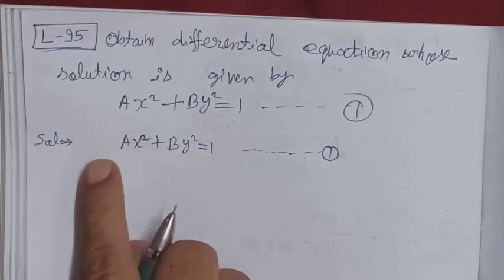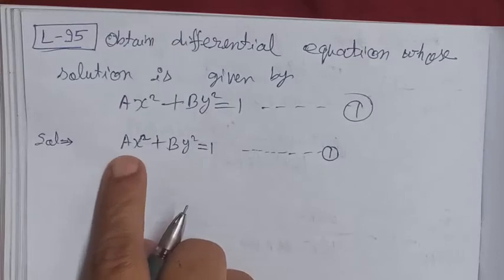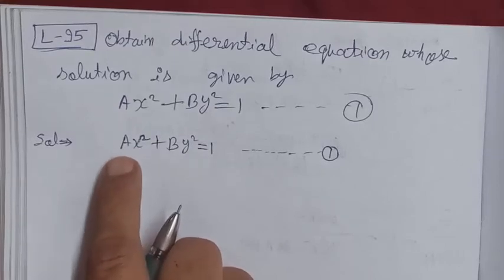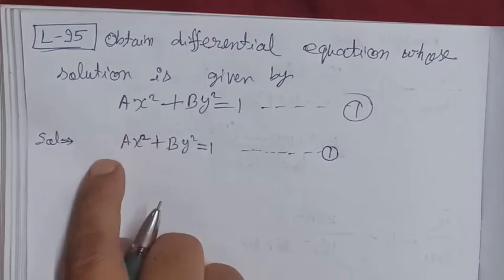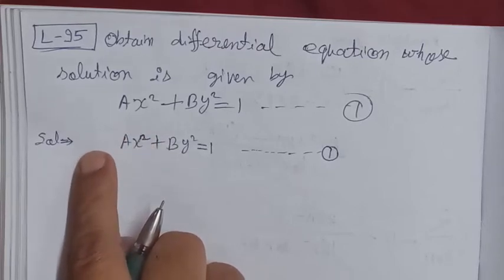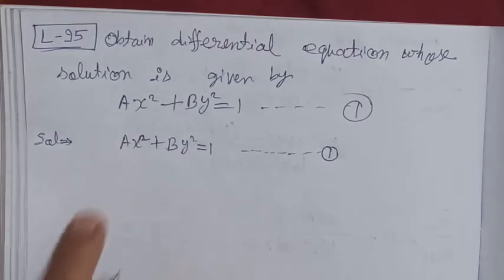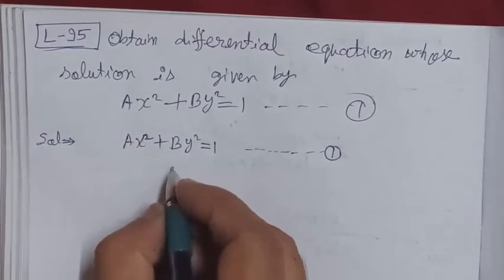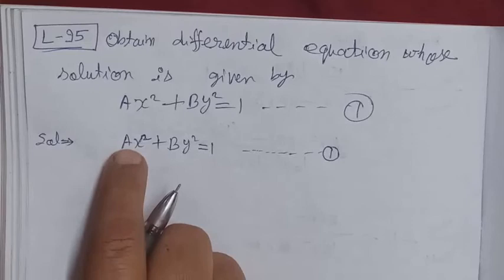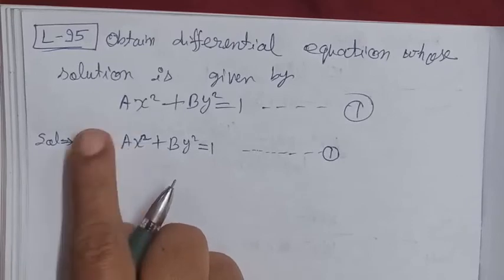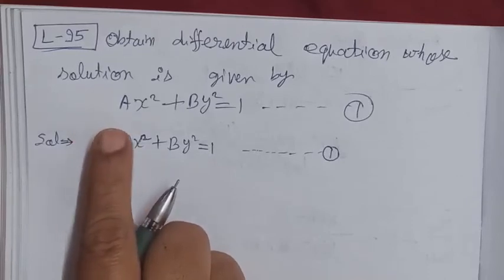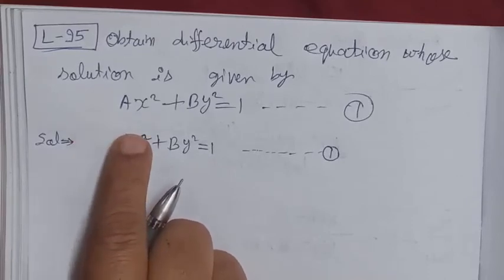Since there are two arbitrary constants, a and b, we need to eliminate them. We are allowed to differentiate the equation as many times as there are arbitrary constants — so we differentiate twice. After differentiation, the arbitrary constants a and b must not be present in the final equation.